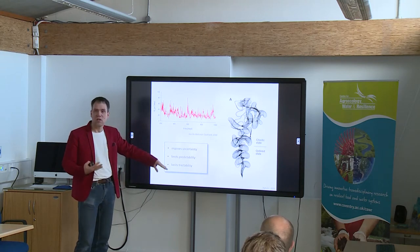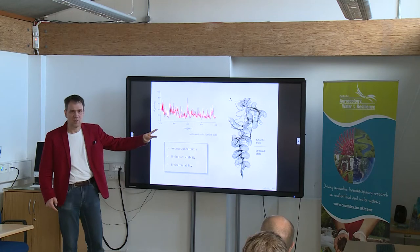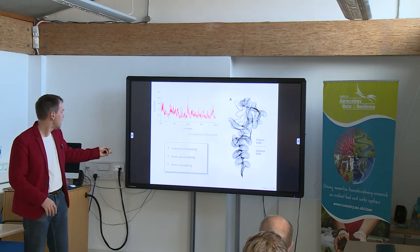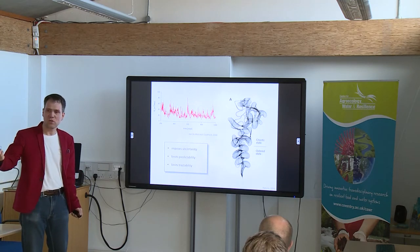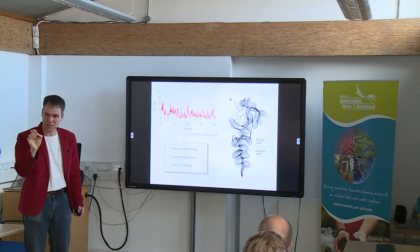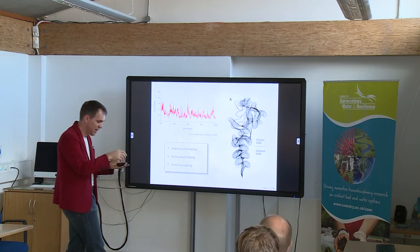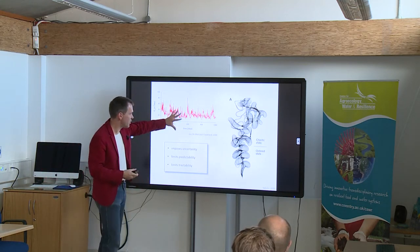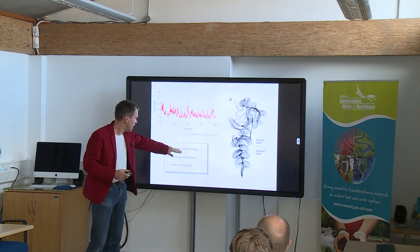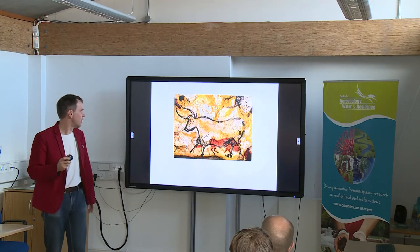Non-linear dynamics impose some uncertainty in interpreting model output. It limits predictability, because a small change in the system might give you a completely different output. It also limits explainability — if you want to reconsider exactly what caused a particular dynamic to occur, what triggered it, you have to step back and analyse in more detail, and you may not get the exact same response because of those non-linear elements.